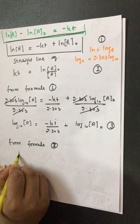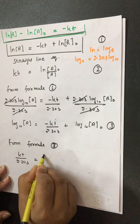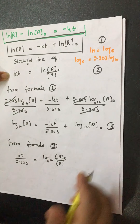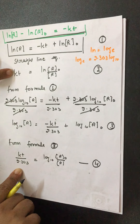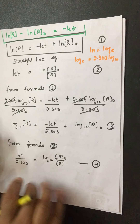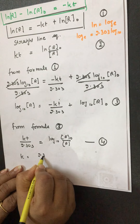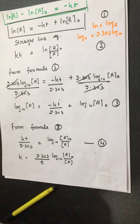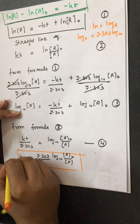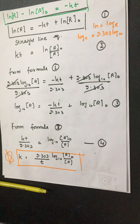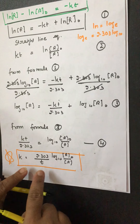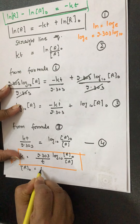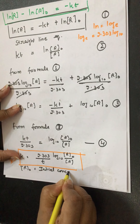From formula 3, we can find the relation between rate constant and concentration with respect to time: kt over 2.303 equals log₁₀ R₀ over R. So k equals 2.303 over t times log₁₀ R₀ over R. This is formula number 5 and is very, very important — most numerical problems will be solved using this formula.